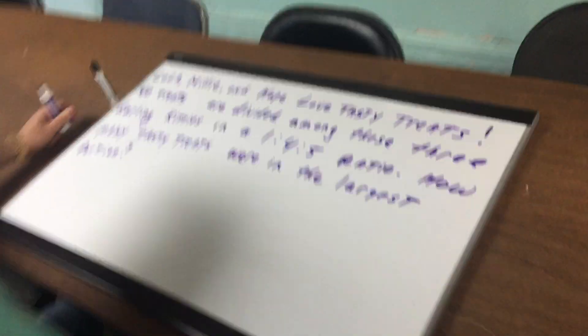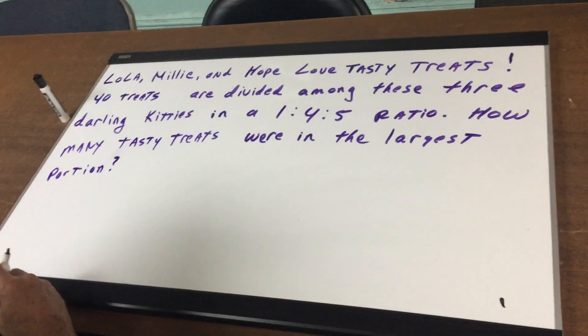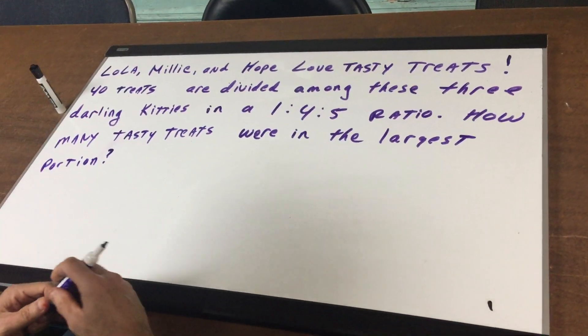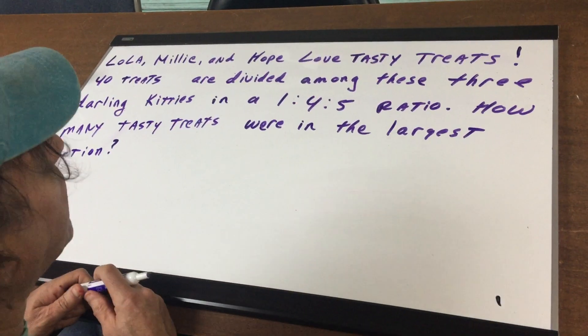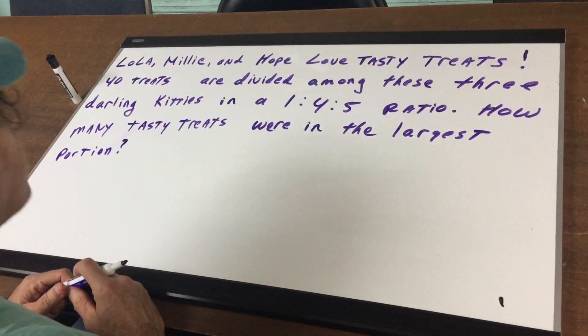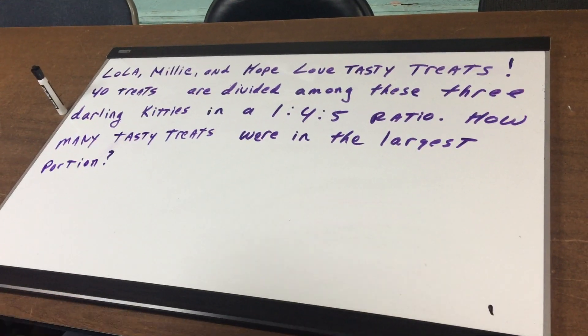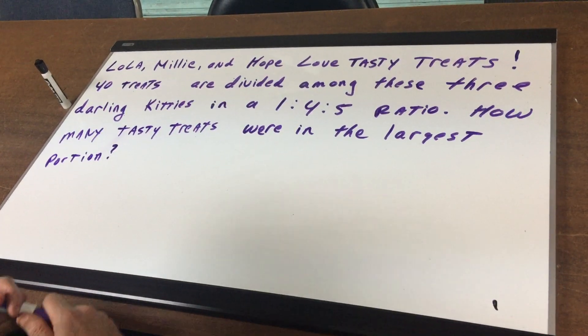I want to go over a real easy question with you. We're doing a math problem today, a word problem. The word problems on the DAT can become very easy and they can get quite involved. So let's start off today with an easy question, a slam dunk type of question you're going to see on the DAT. What we have here is three cats — a cat named Lola, Millie, and Hope — and they love tasty treats. We had 40 treats and we're going to divide these 40 treats among these three little kitties in a ratio of one to four to five. And I want to know how many tasty treats were in the largest portion.